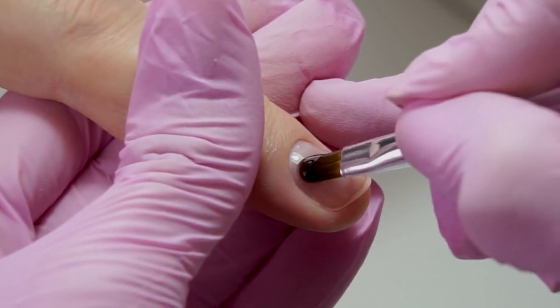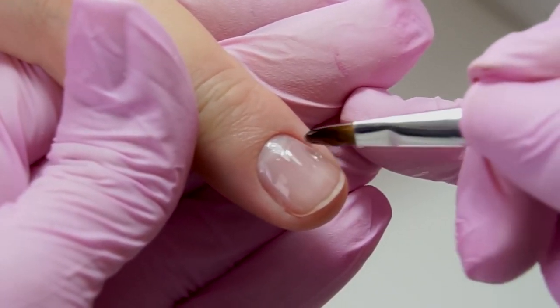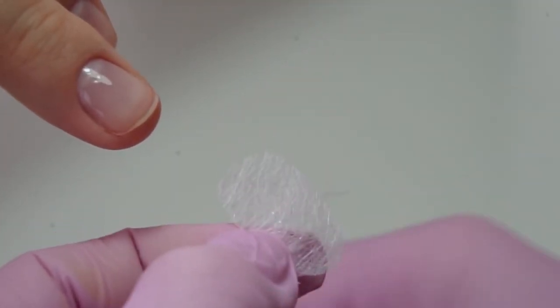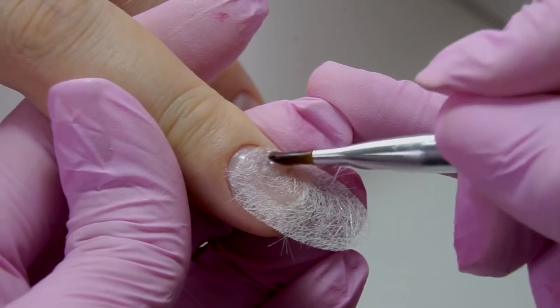I'm applying some transparent sculpting gel. I usually work with camouflage ones, but here I chose transparent to see how clear the tip would be. Grabbing a fiberglass fragment, put it on the nail, and soak with the material.